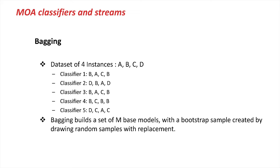The Hoeffding Adaptive Tree was a single classifier. Now of course we all know that for utmost predictive accuracy you want to have ensembles. A very simple ensemble method is bagging. Bagging is easily made into an online algorithm because if you bag an incremental algorithm like the Hoeffding Tree, you have an incremental ensemble immediately — no problem there.